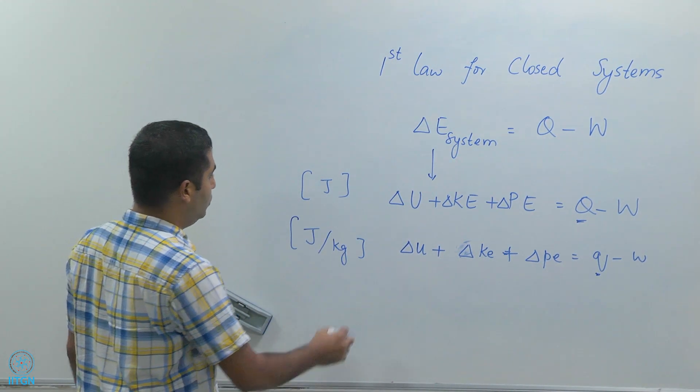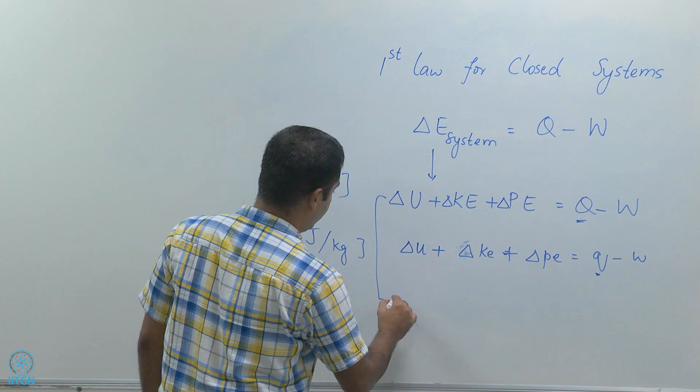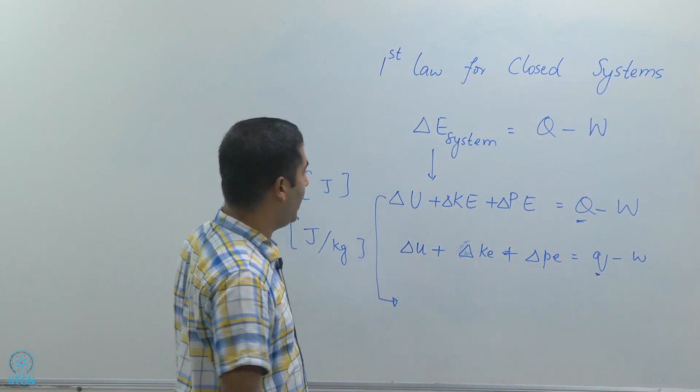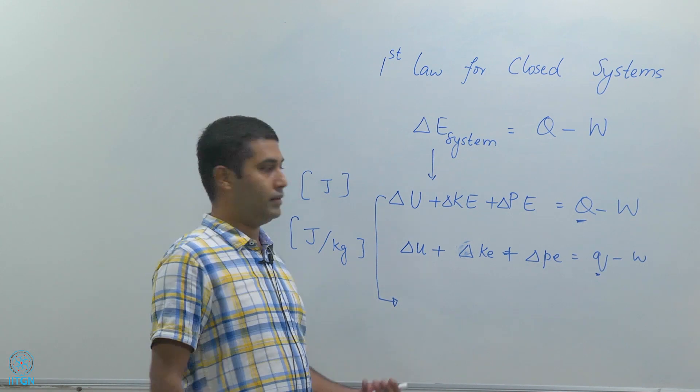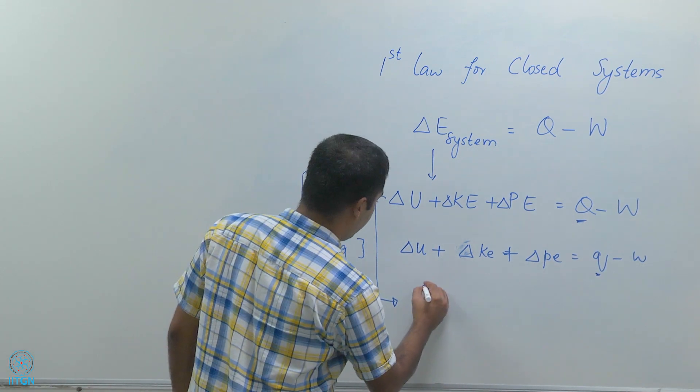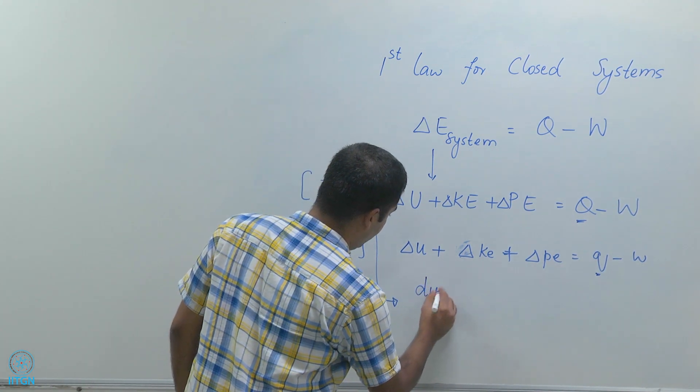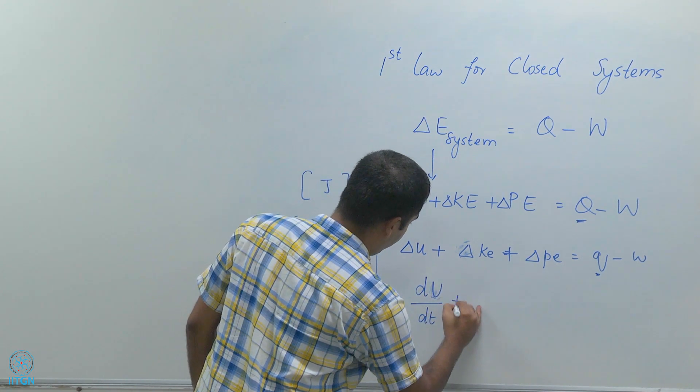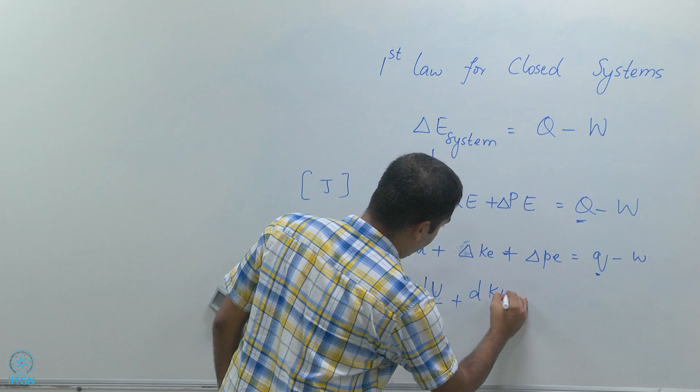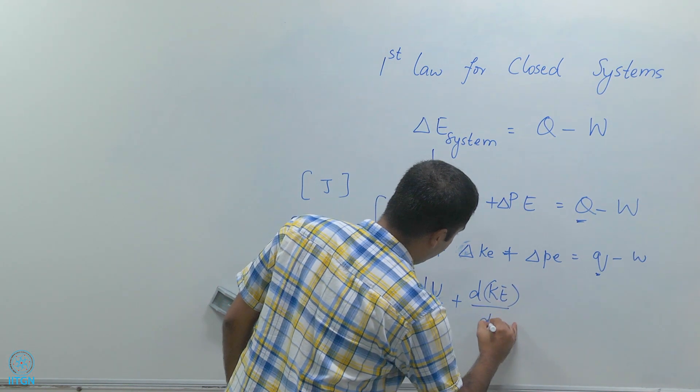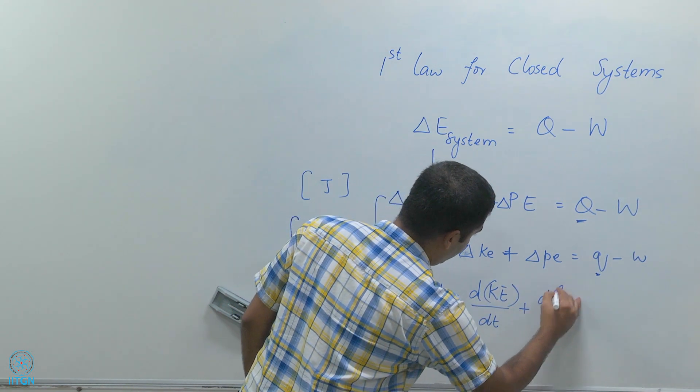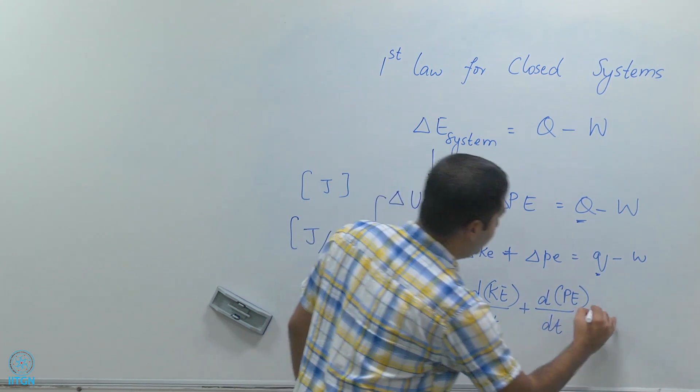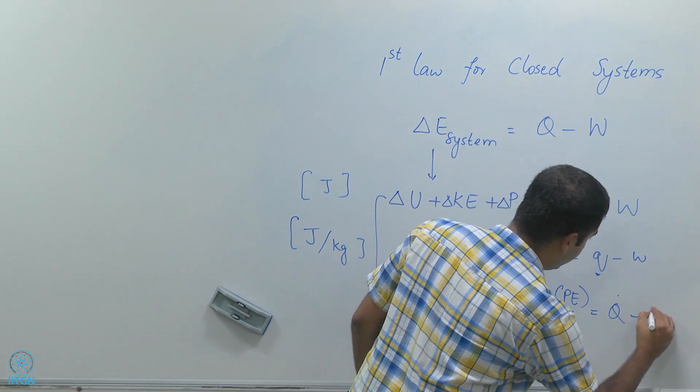I can also do a differentiation of this and then we come to processes. Then I can talk about rates. For example, I can write dU/dt plus dKE/dt plus dPE/dt should be equal to Q dot minus W dot.